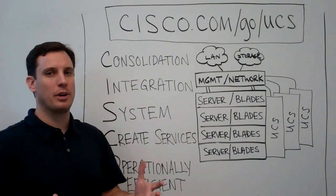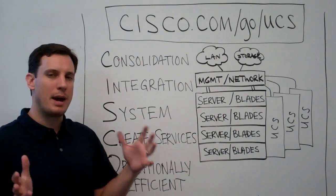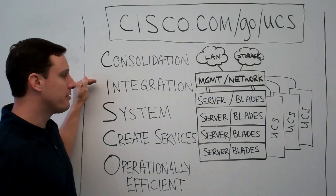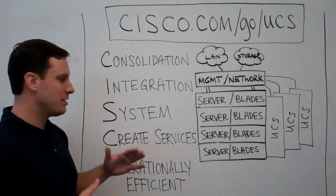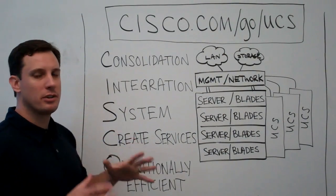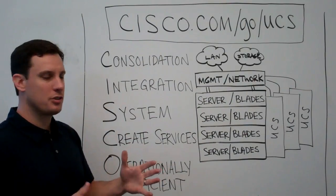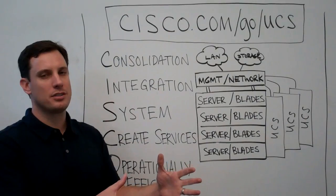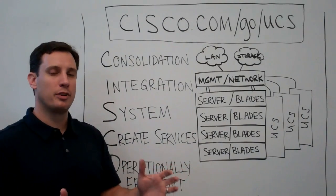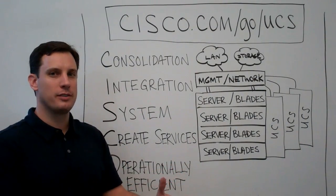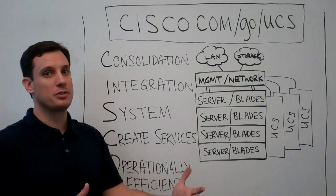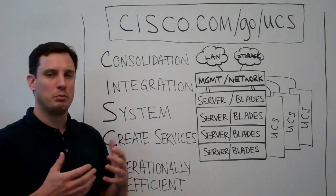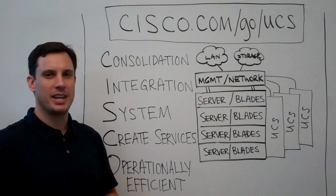So completely tightly integrated back into their operational system. Once again, if we wrap these things all up: it's consolidated, it's integration points for the service provider, it's a system that can be managed as a system, it's going to help them create services faster and with more diversity, and operationally it's going to be extremely efficient and very simple to integrate into their overall system. So as they're looking at a platform for deploying new services, next generation services, managed services, hosted services, or cloud computing services, Cisco UCS is the platform they should be looking at. Thanks and great selling.